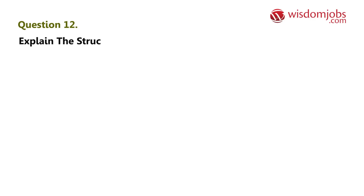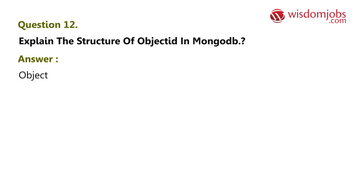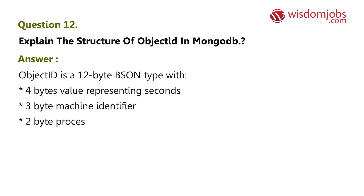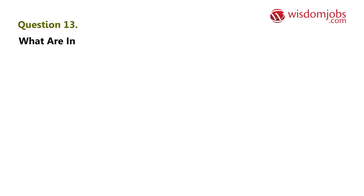Question 12: Explain the structure of ObjectId in MongoDB. Answer: ObjectId is a 12-byte BSON type with 4 bytes representing seconds, 3-byte machine identifier, 2-byte process ID, and a 3-byte counter.